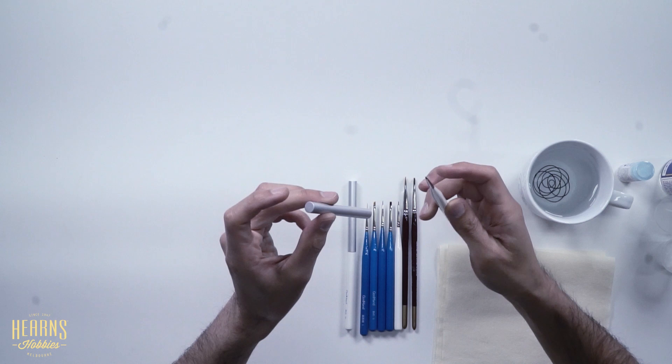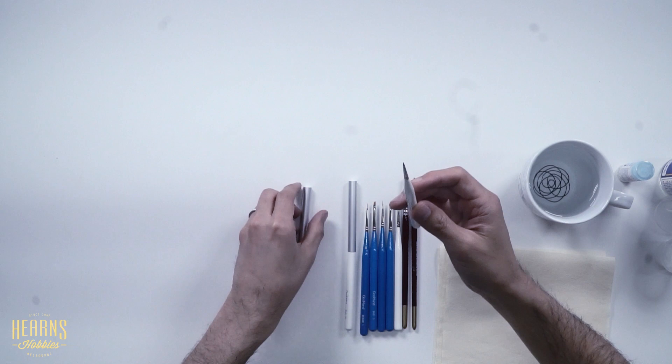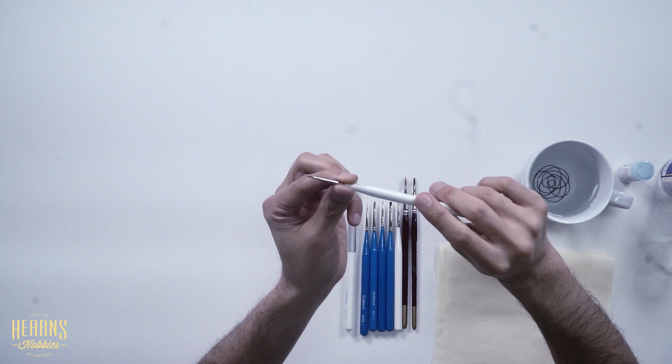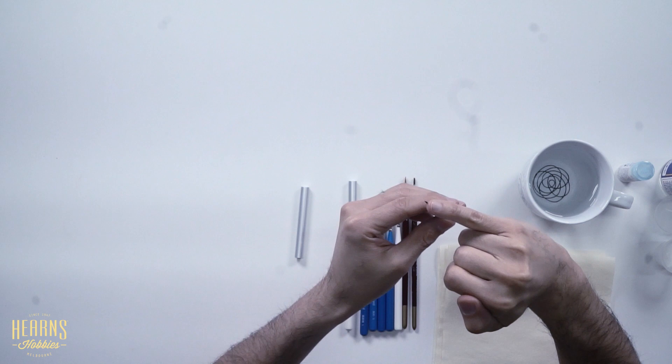Once you've got the cap off, you've got quite a nice stumpy handle here. This is all lightweight wood, and then it comes to this nicely chromed tip which holds onto the very fine synthetic bristle here.